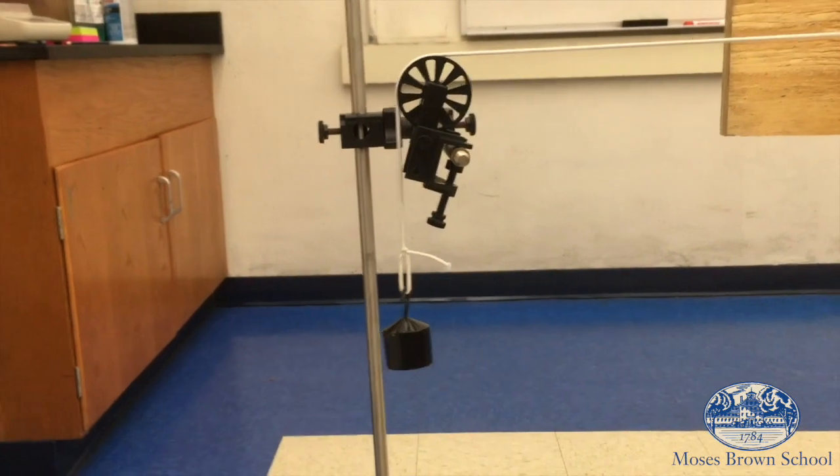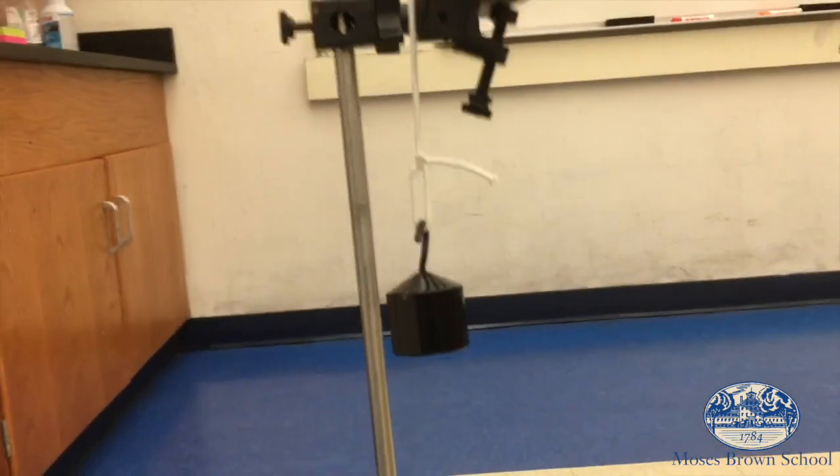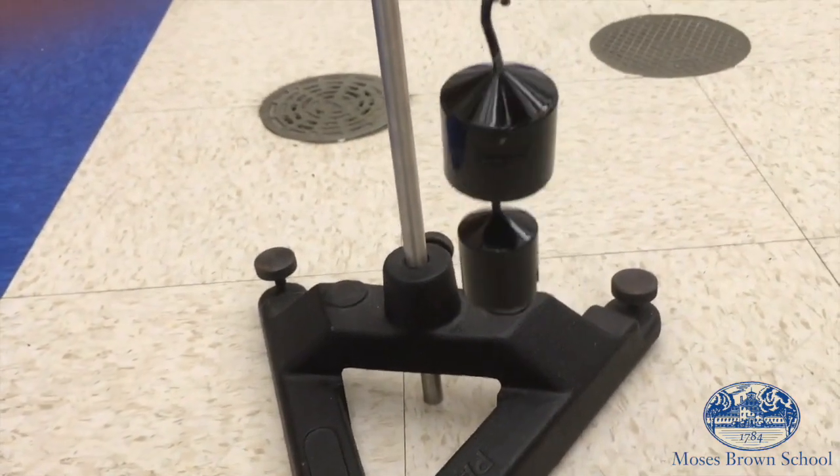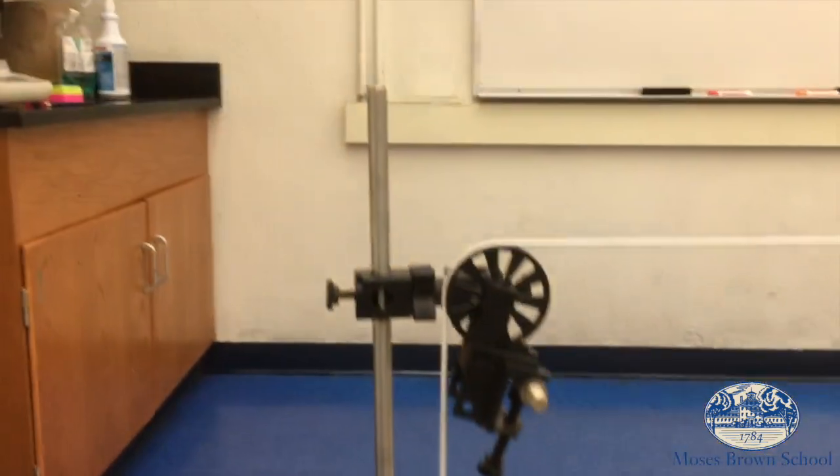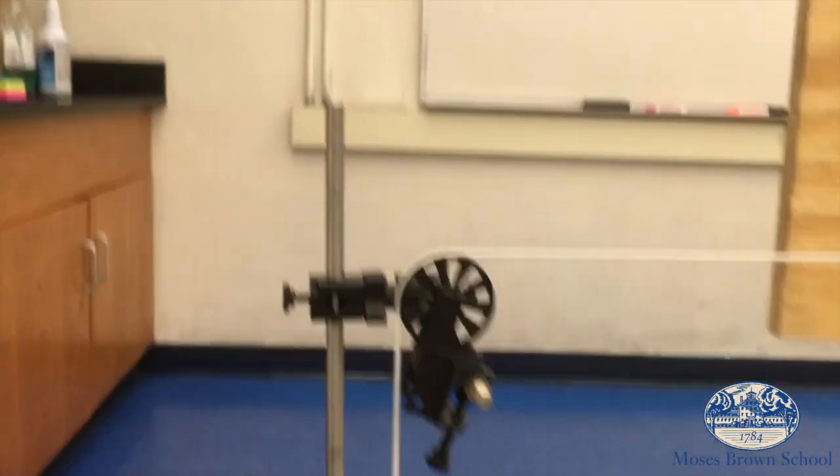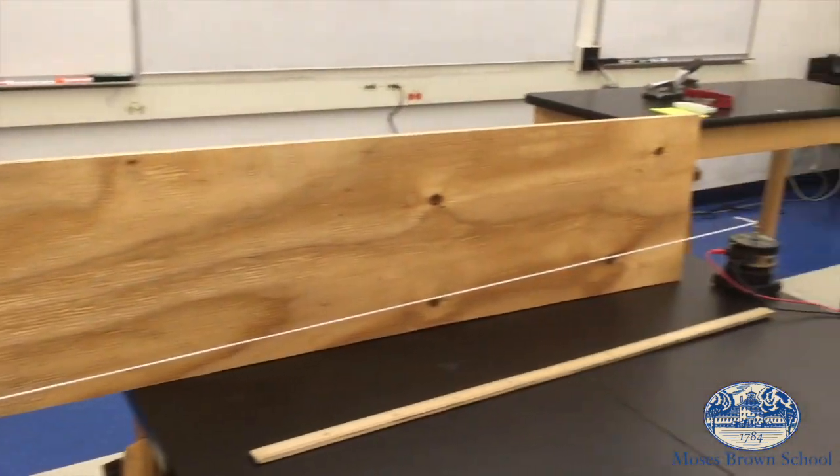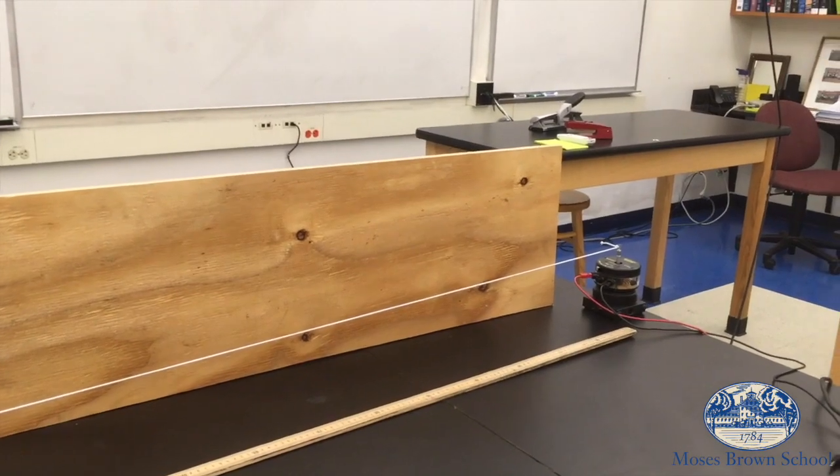So here we have the original pulley set up with some mass hanging over the end and now we're going to come in and hang an extra mass onto the one that was already there. That's going to increase the tension in the string. Now we haven't moved the pulley, it's still in the same place and so the length of the string is still the same. But we expect something different to happen in this part of the experiment.